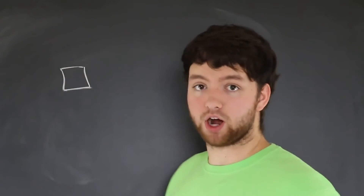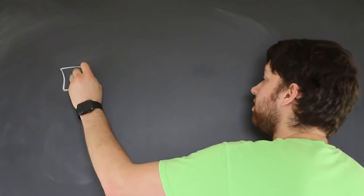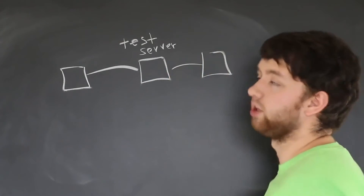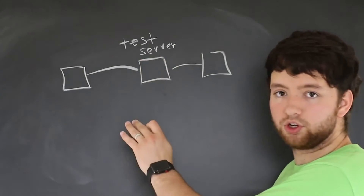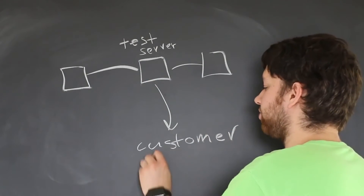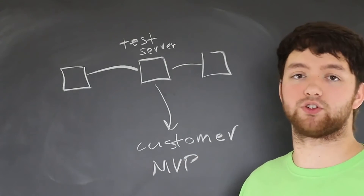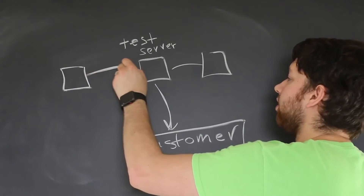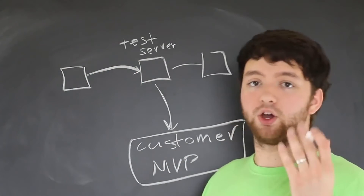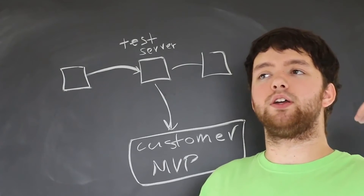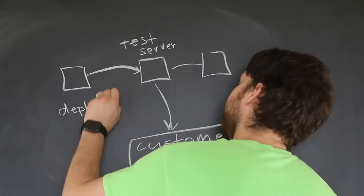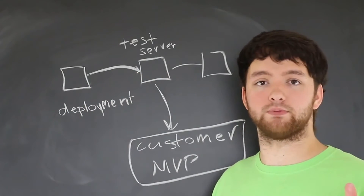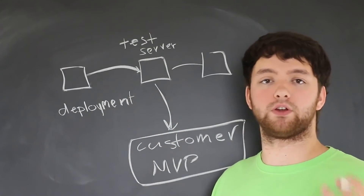So for example, if you consider this box your laptop, this is where you type your code. When you're done, you're going to push that code into a test server. And then sometimes you might even have another server, which would be a deployment server. Once it's there, we can check to make sure it's good and then give it off to the customer. This would be after we reach the MVP. The process of sending our code to the test server is known as a deployment. We will deploy our code to this test server as if it was the customer.